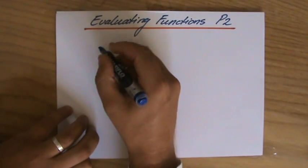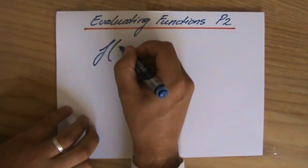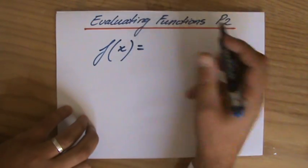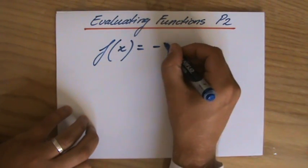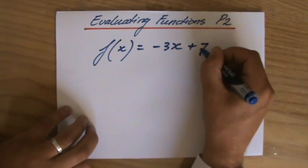Now let's say we have the function f where x is the variable, and that is -3x + 7.